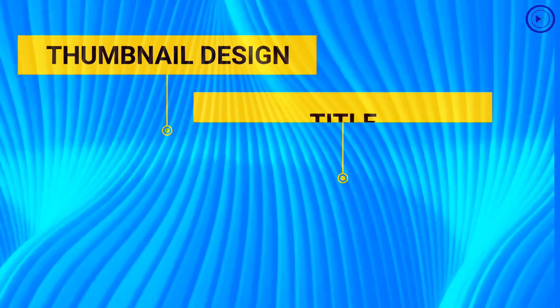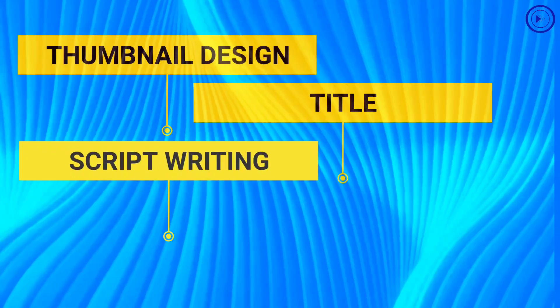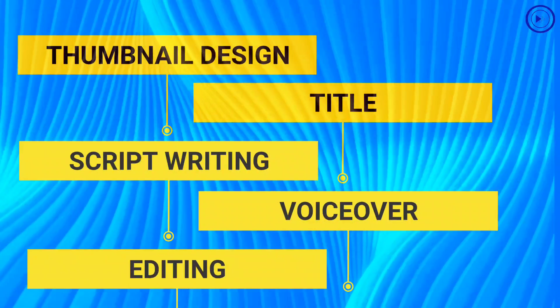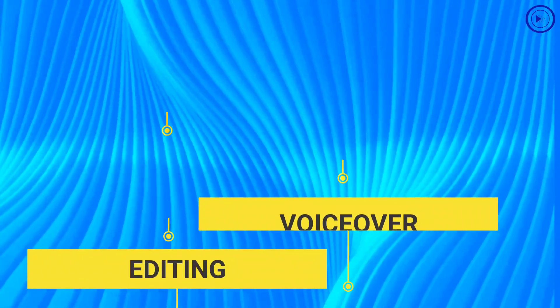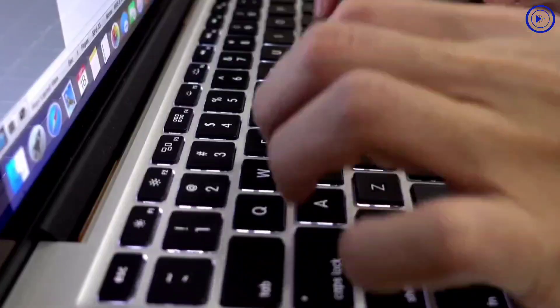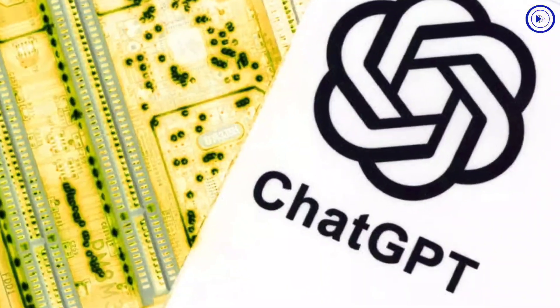His strategy had five steps: one, the thumbnail design; two, the title; three, the script writing; four, the voiceover; and five, the editing. Matt began writing his script and decided to enlist the help of ChatGPT.